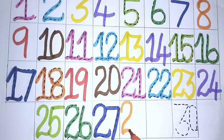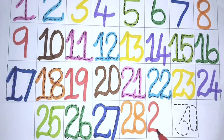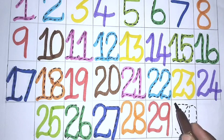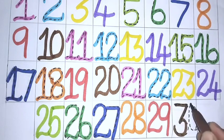Two, eight, twenty-eight. Two, nine, twenty-nine. Three, zero, thirty.